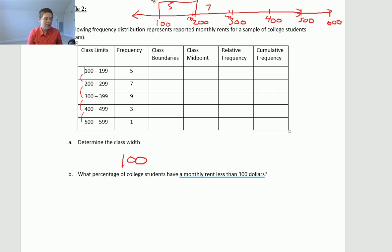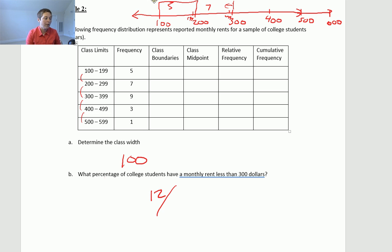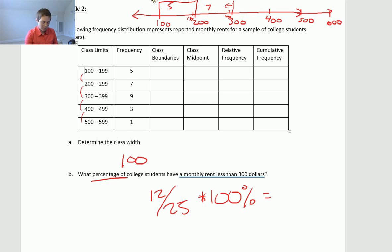What percentage of college students have a monthly rent less than $300? So I have five and seven students reporting less than $300, which makes 12 students. 12 out of how many? I need to do 12 plus 9 plus 3 plus 1, which is 25 students total. So 12 out of 25 — and since it's asking for a percentage, I multiply by 100%: 12 divided by 25 times 100 is 48%.